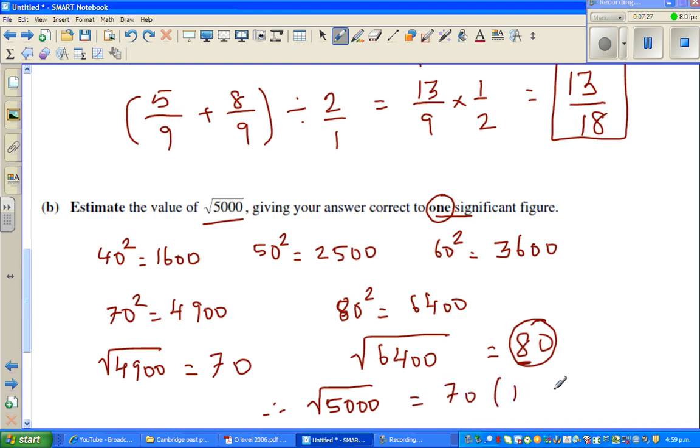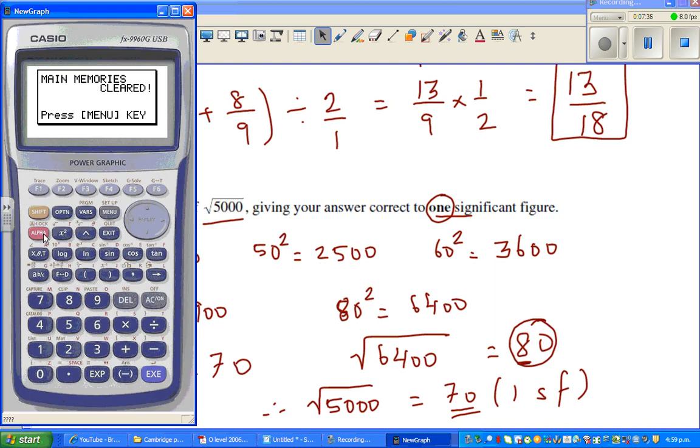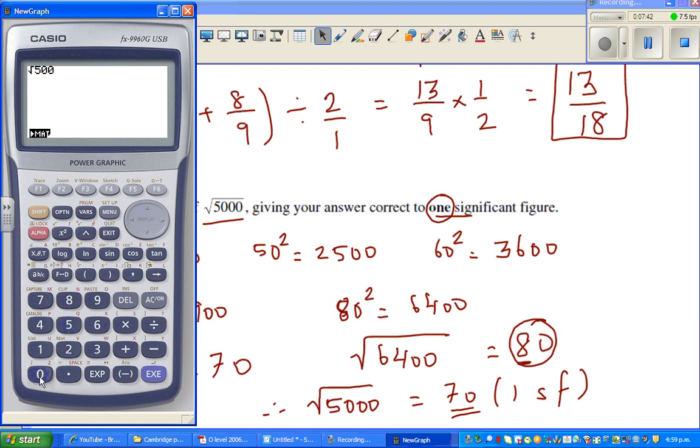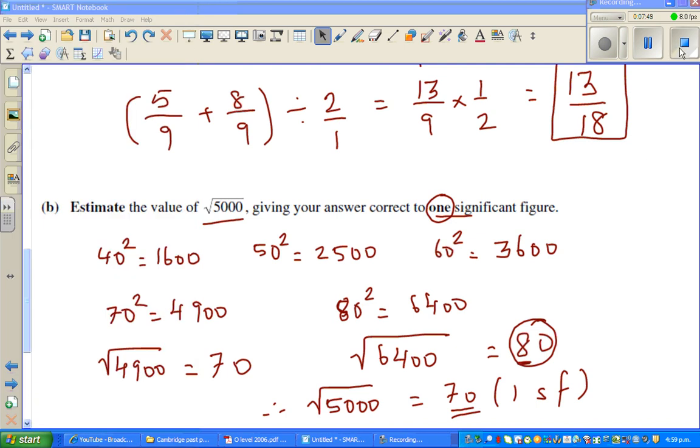So you'll write like this: one significant figure. This is 70 point something. Let's just explain what I mean on a calculator. Square root of 5000 is 70.7. So this is in one significant figure, this is 70. See you in the next video.